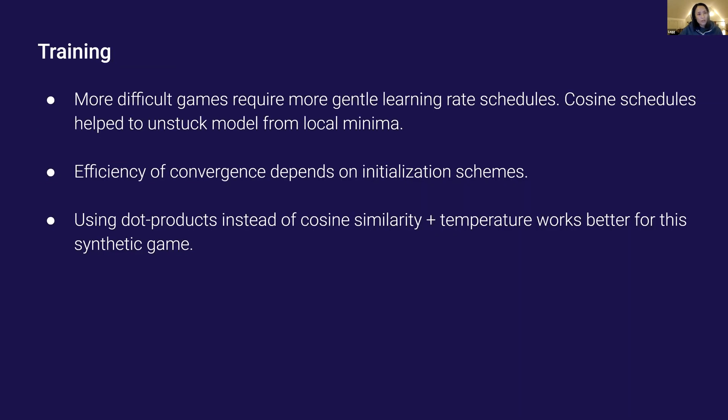Here are a few things I learned from training these models. More difficult games require more gentle learning rate schedules. Cosine schedules help to unstuck models from local minima in some cases. Efficiency of conversions depends on initialization schemes. Using dot products instead of cosine similarity and temperature works better for this data. Overall, I think these observations are more specific to the nature of this synthetic game than contrastive models.